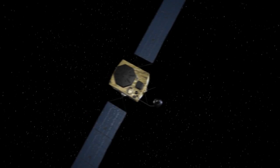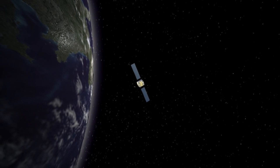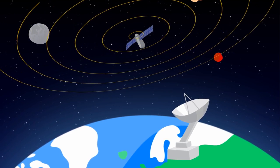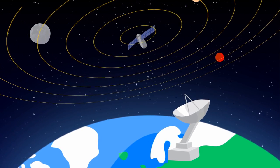Satellites connect many important devices in our daily lives, from the GPS on your phone to the TV shows you watch at home. But how exactly do satellites receive signals in space and then send them down to Earth?